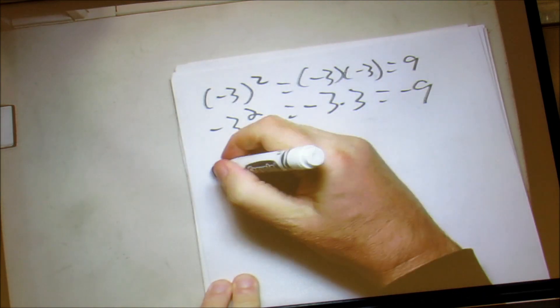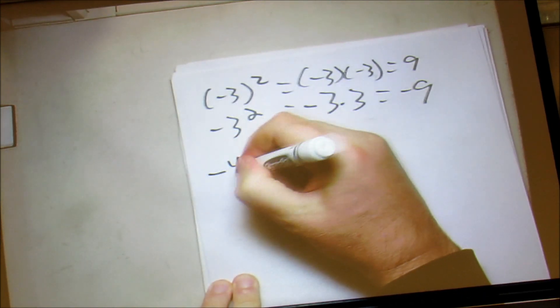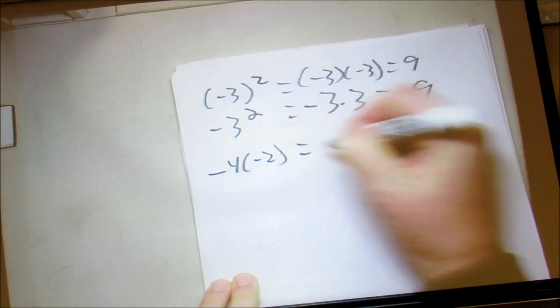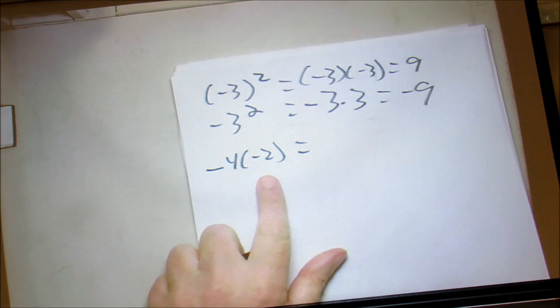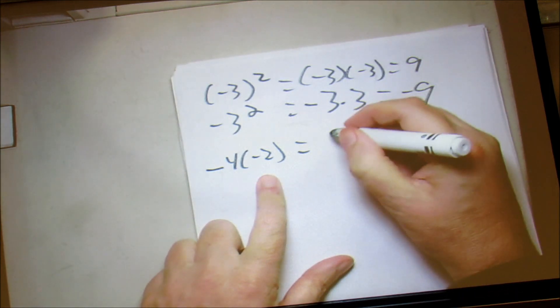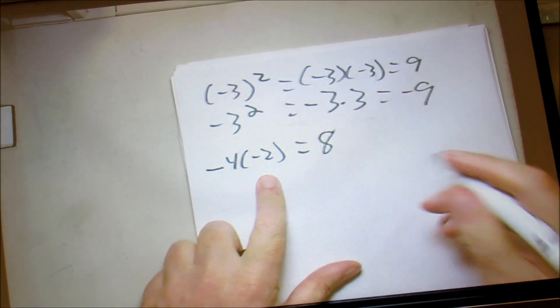Then we have something like negative 4 times negative 2. We have a negative times a negative, so it's positive 8.